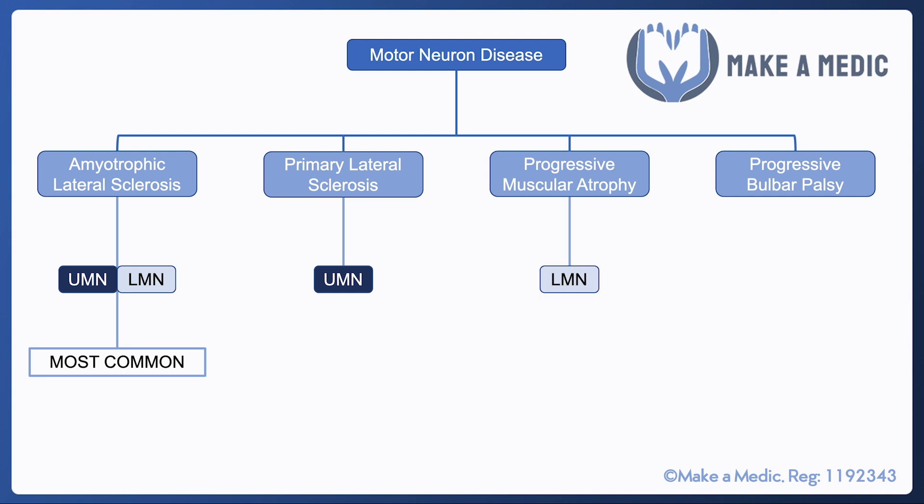Progressive muscular atrophy on the other hand just affects the lower motor neurons, and progressive bulbar palsy just affects cranial nerves 9 to 12. Given that it just affects those nerves, it usually presents with dysarthria and dysphagia.